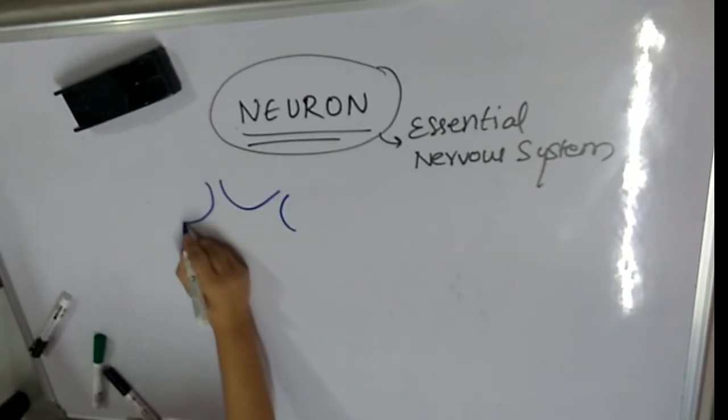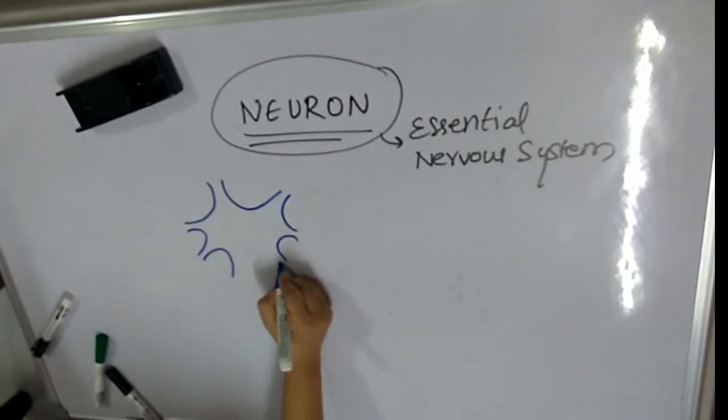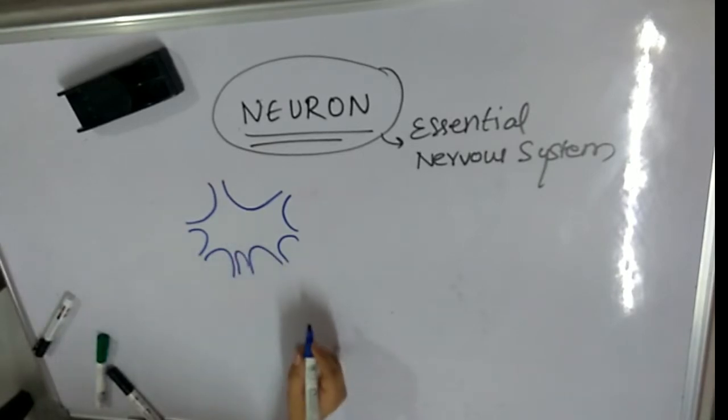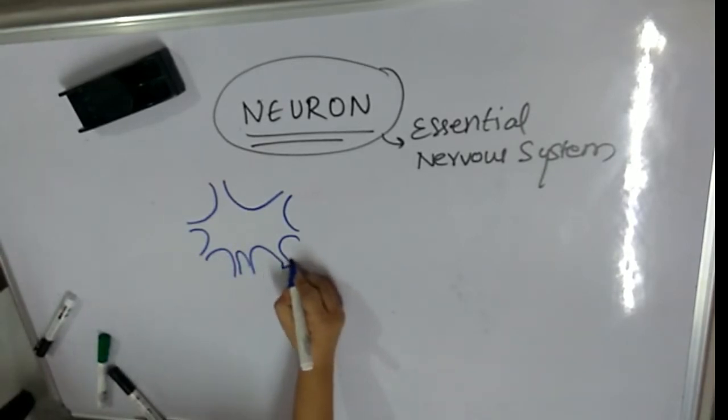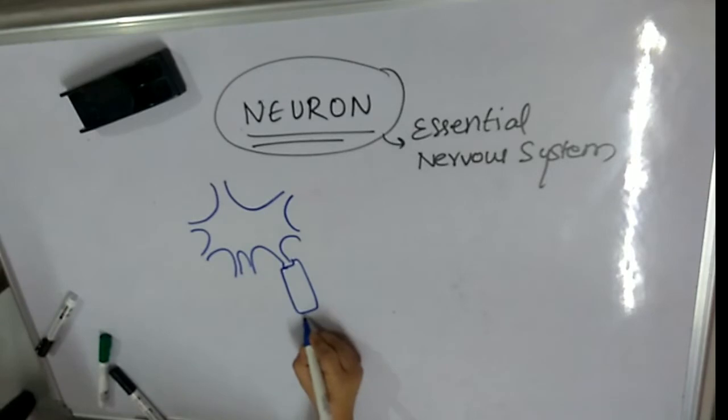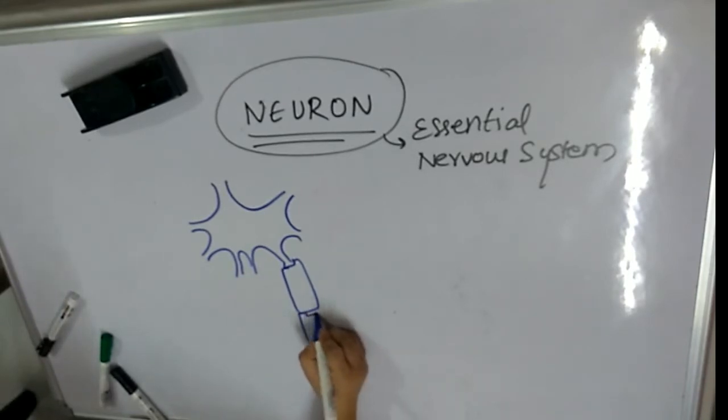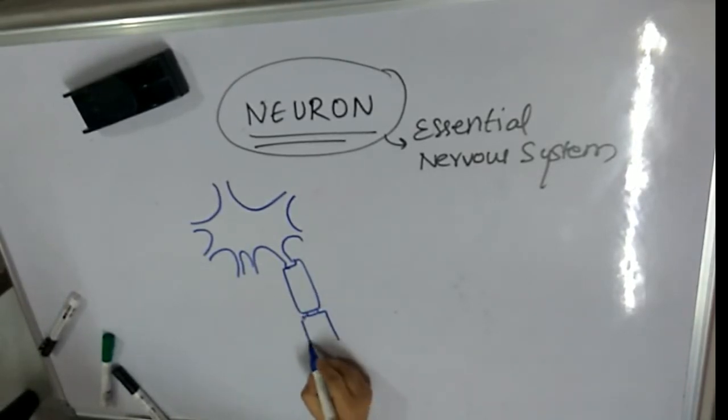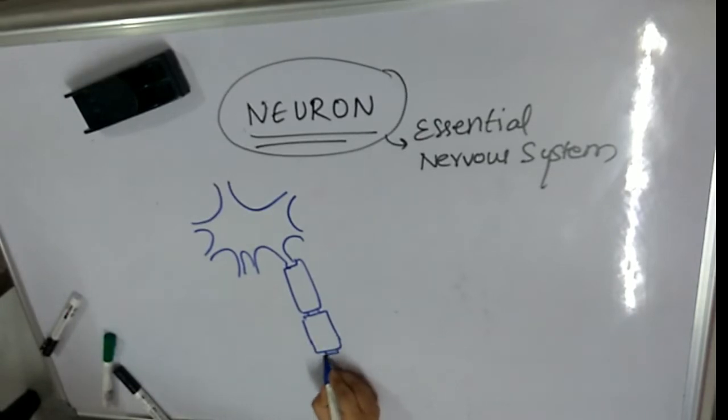A neuron has a lot of dendrites which are responsible for sending out information to other neurons. We know that neurons are not physically connected to each other and share information with the help of a synapse.